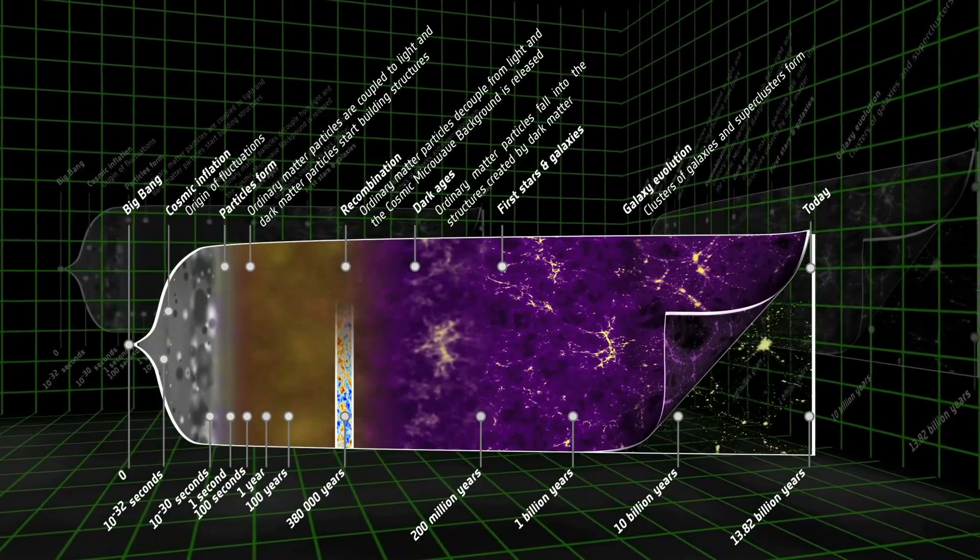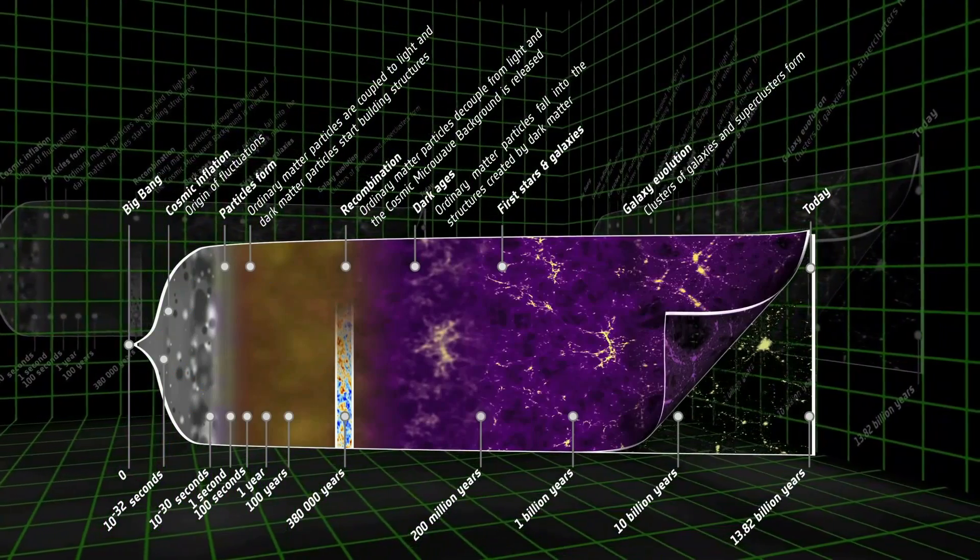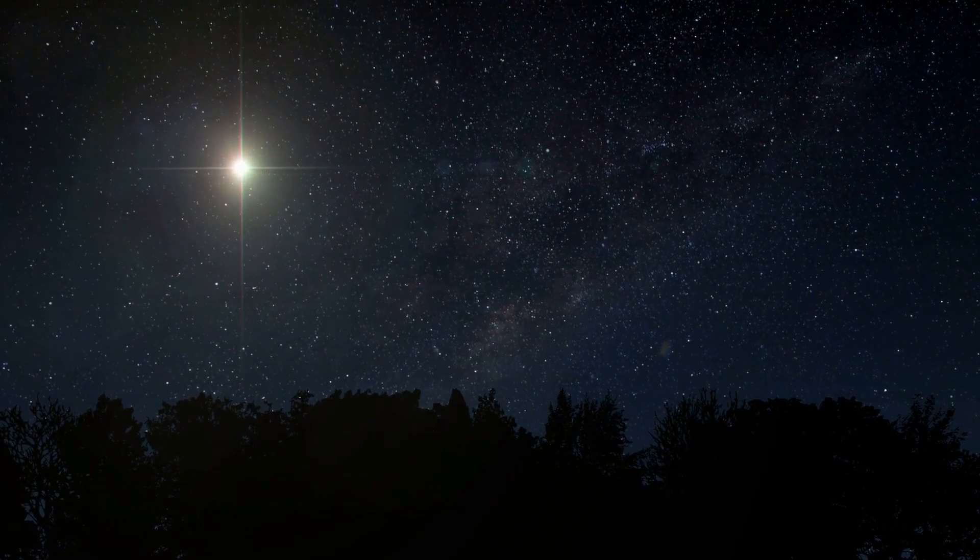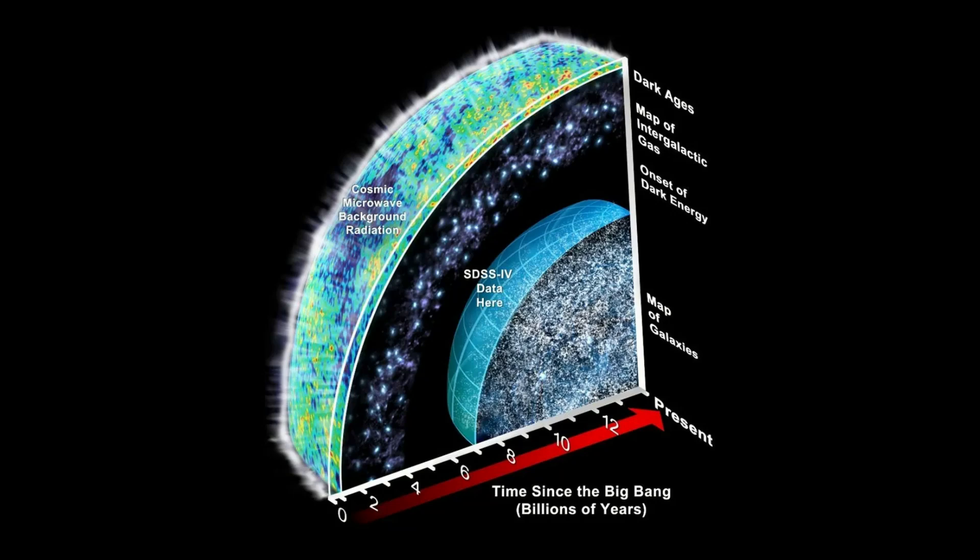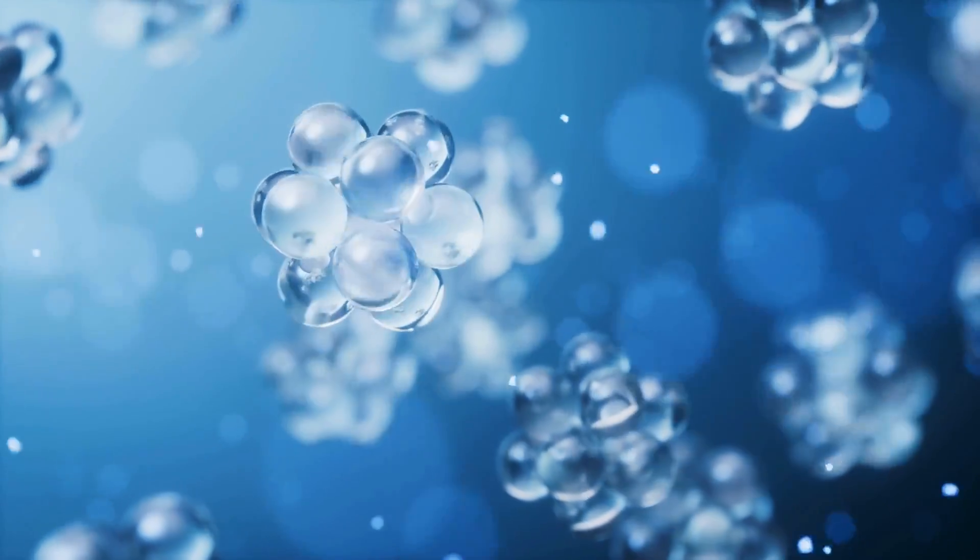The wonderful thing is that we're making measurements now. I should say the experimental basis for all this is something called the Cosmic Microwave Background Radiation, or the CMB. So we can look up into the sky, and we can see the oldest light in the universe. It was released 380,000 years after the Big Bang, when the universe cooled down sufficiently for atoms to form.